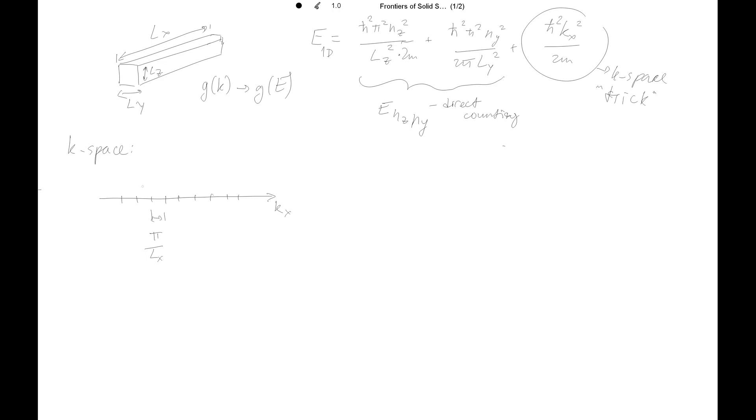And what we will be doing, we will be considering again some region dk. In one-dimensional case it's quite easy actually. So g(k)dk, density of states in 1D, is just dk divided by π/Lx. And you have Lx·dk/π.